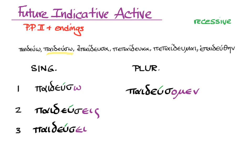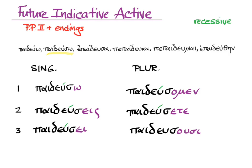The first person plural is paideosomen — stem from the second principal part, ending, acute. Second person plural, paideoseta: y'all will educate. And finally, third person plural, paideosusi — or with the nu movable, paideosusin — and the accent: they will educate.